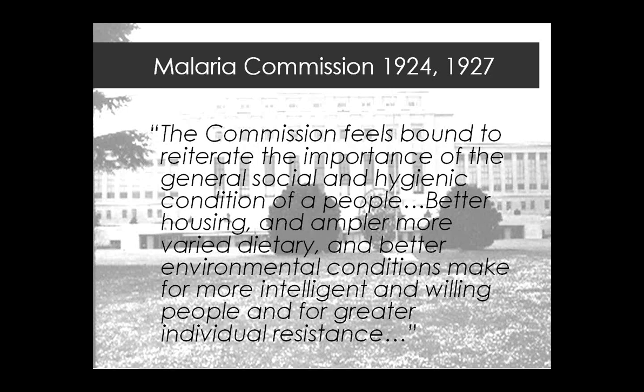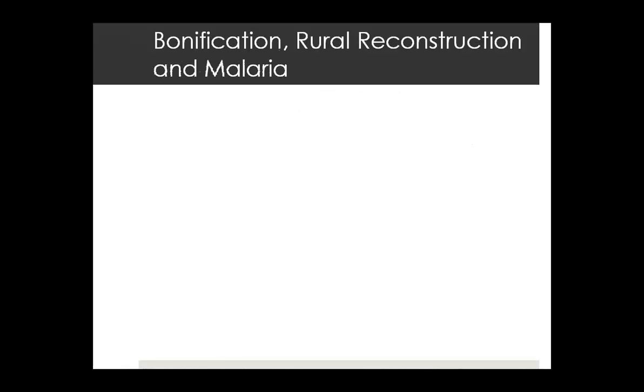In the 1920s, the League of Nations commission came to a number of conclusions, one of which was to reiterate the importance of the general social hygienic conditions of a people. Better housing, a more varied dietary, and better environmental conditions make for more intelligent and willing people and for greater individual resistance. There were a number of experiments which tried to blend malaria control with rural rehabilitation and development of agriculture and industry.